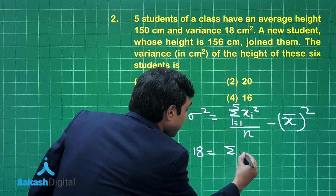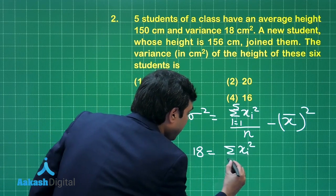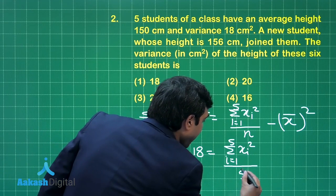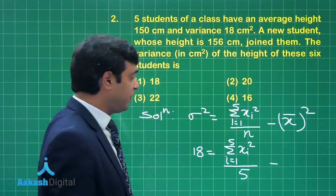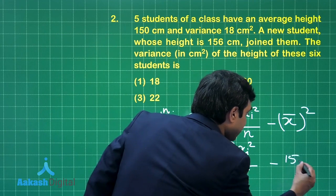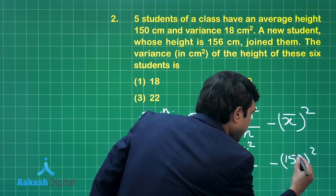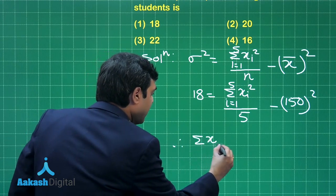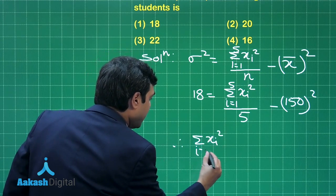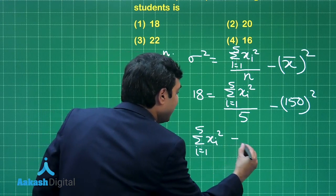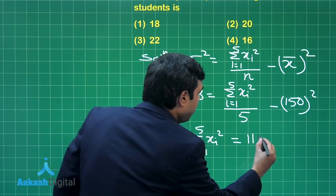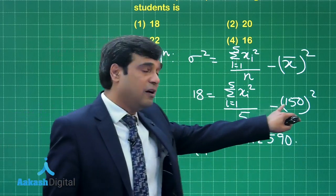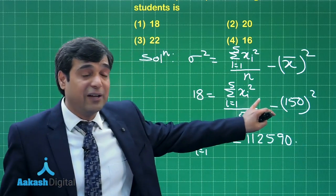Now when you simplify this result, you are going to get Σxi² (where i = 1 to 5) equals 112,590. This is just the simplification calculation part: 150² is 22,500, take it to the other side, multiply by 5, and you get the result.